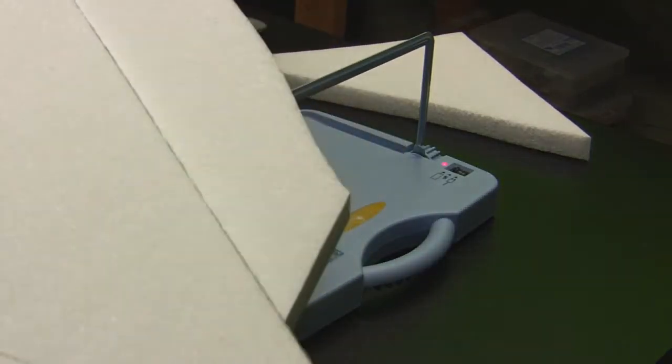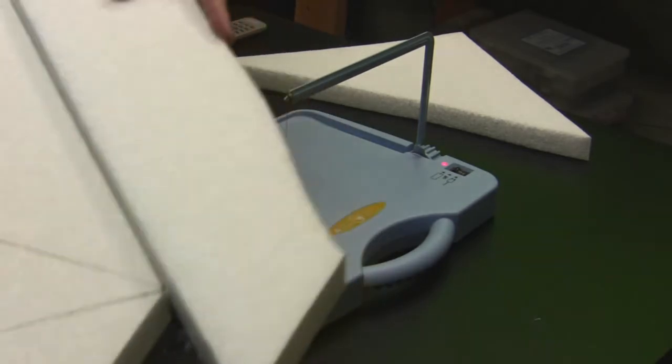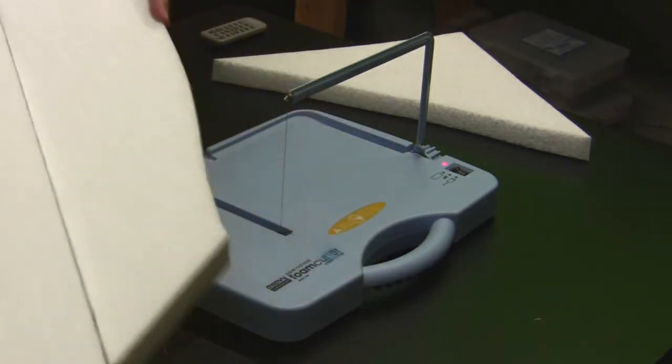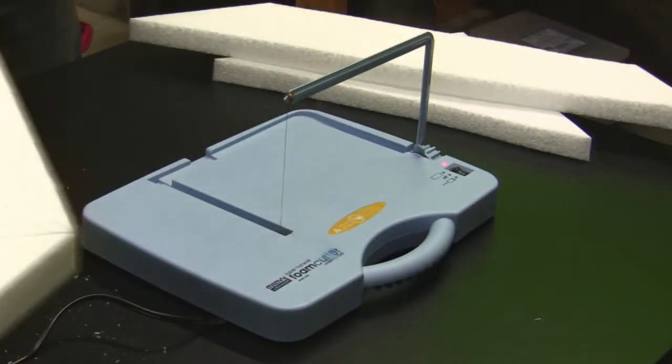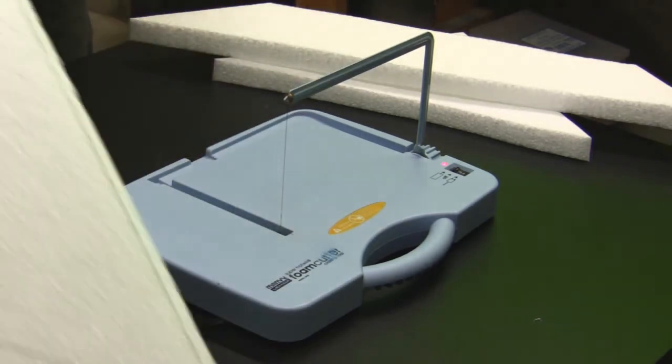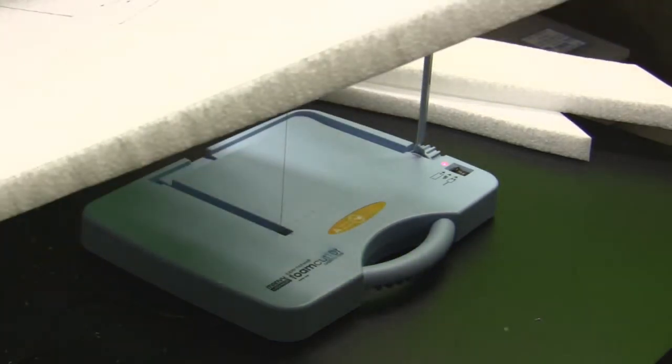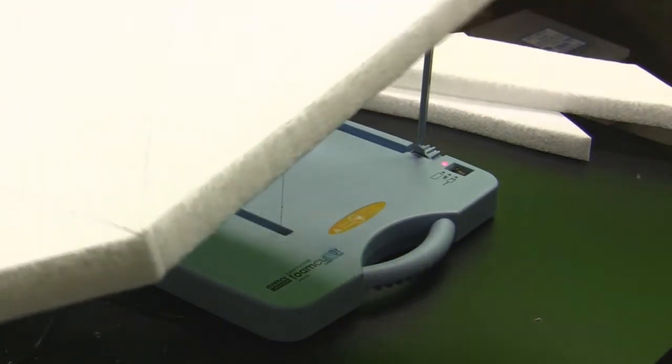And with EPP foam, it's easiest to clean it up by just rubbing the two pieces together to give off all the little shavings. And it will leave a fairly clean cut on the end of the foam.